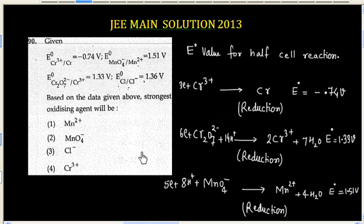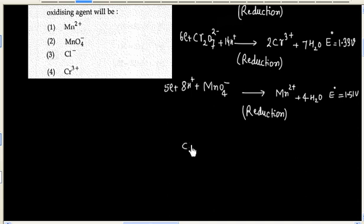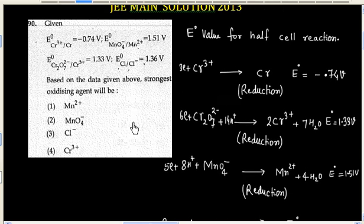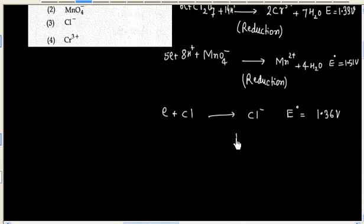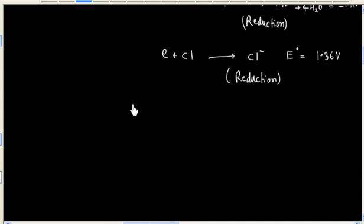And finally we have Cl₂ to Cl⁻, and E° value is 1.36 volt. This is again a reduction half-cell. So basically all reactions are reduction half-cells.